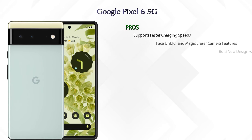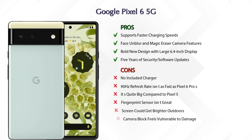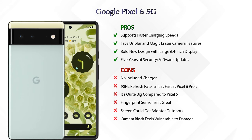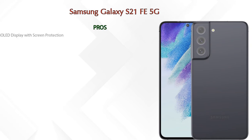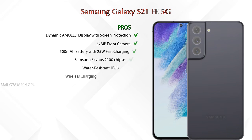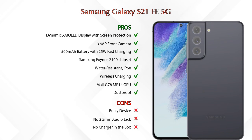Now let's talk about pros and cons. The Google Pixel 6 5G has four pros and six cons. The Samsung Galaxy S21 FE 5G has eight pros and three cons.